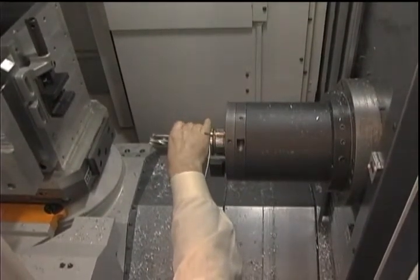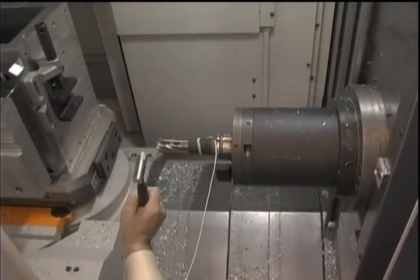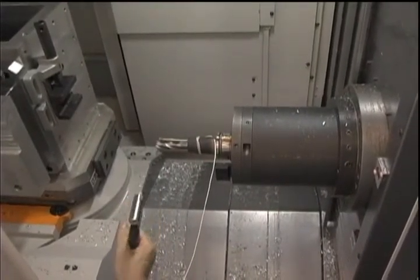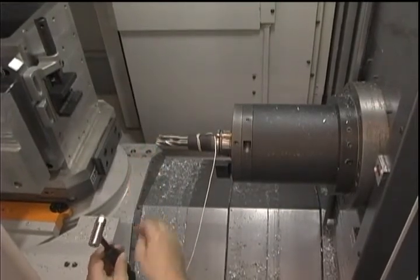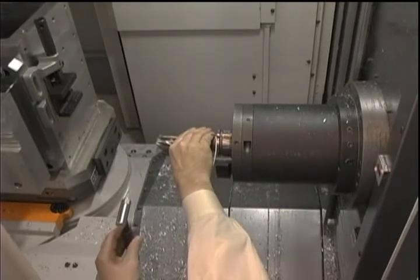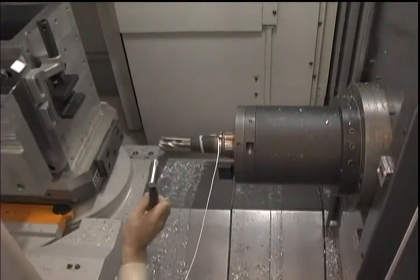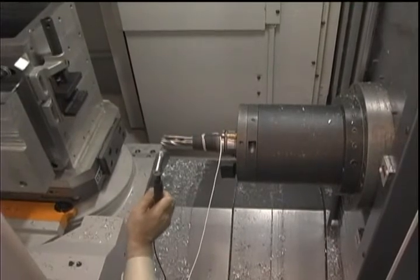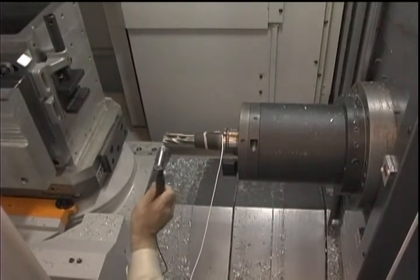First, we want to collect the measurement in the feed direction. Let's say this direction is the feed direction. As you see, the accelerometer is parallel, and I have to hit the hammer right across the accelerometer. They must be in line. The first hit must be a bit strong to autorange the data acquisition system.